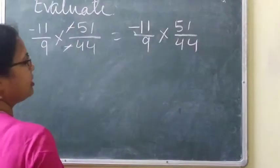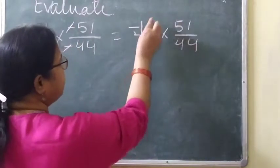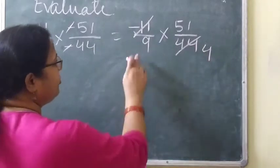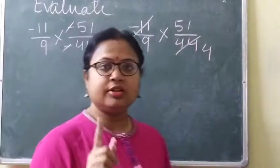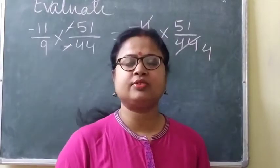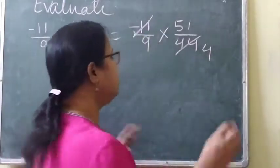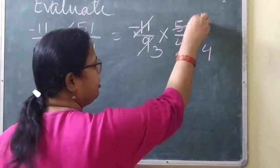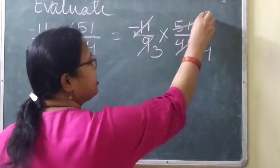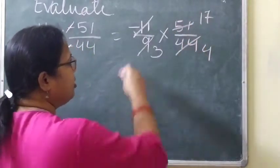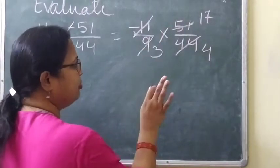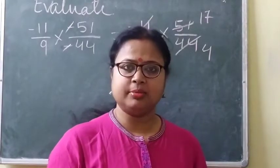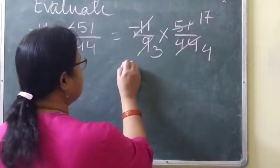Now, 11 and 44 cancel — 11 fours are 44, so we get 4. Can we cancel 9 and 51? Yes. 3 is a common factor of 51 and 9 — three 3s are 9, and three 17s are 51. So we get 17. Now can we cancel any further? No, because there is no common factor. So this will be the answer.